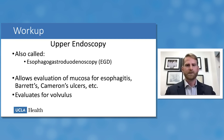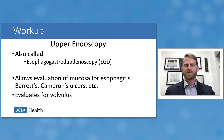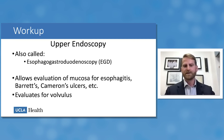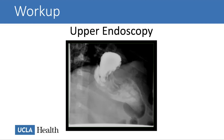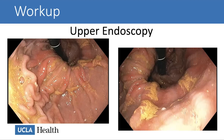Upper endoscopy, or esophagogastroduodenoscopy (EGD), is the next most frequently used study. It is very sensitive for diagnosing a hiatal hernia, allows mucosal evaluation diagnosing esophagitis, Barrett's esophagus, and Cameron's ulcers, and if the scope cannot traverse through the stomach into the duodenum, that can be diagnostic of volvulus. Comparing to the same patient's barium swallow — which looked like a type two paraesophageal hernia — the endoscopic retroflexed view looking back toward the esophagus is shown.